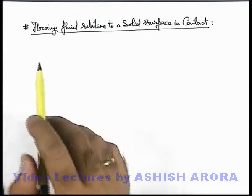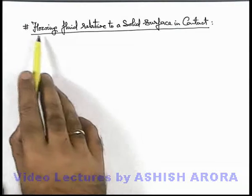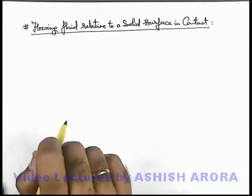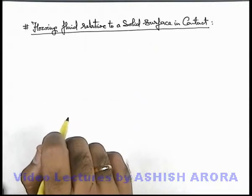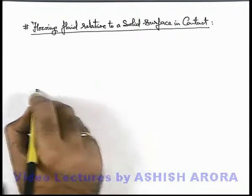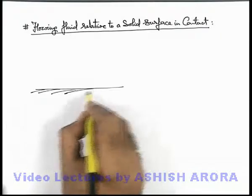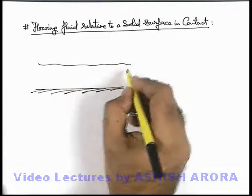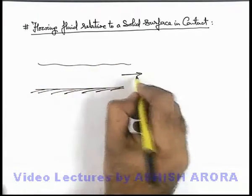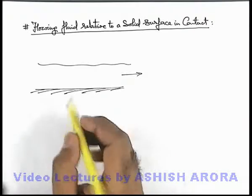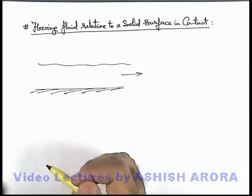Let's discuss the situation of a flowing fluid relative to a solid surface in contact. For the simplest example, say on a ground or solid surface, a fluid is flowing with some velocity. As we have discussed, as we move up, the flow velocity increases.